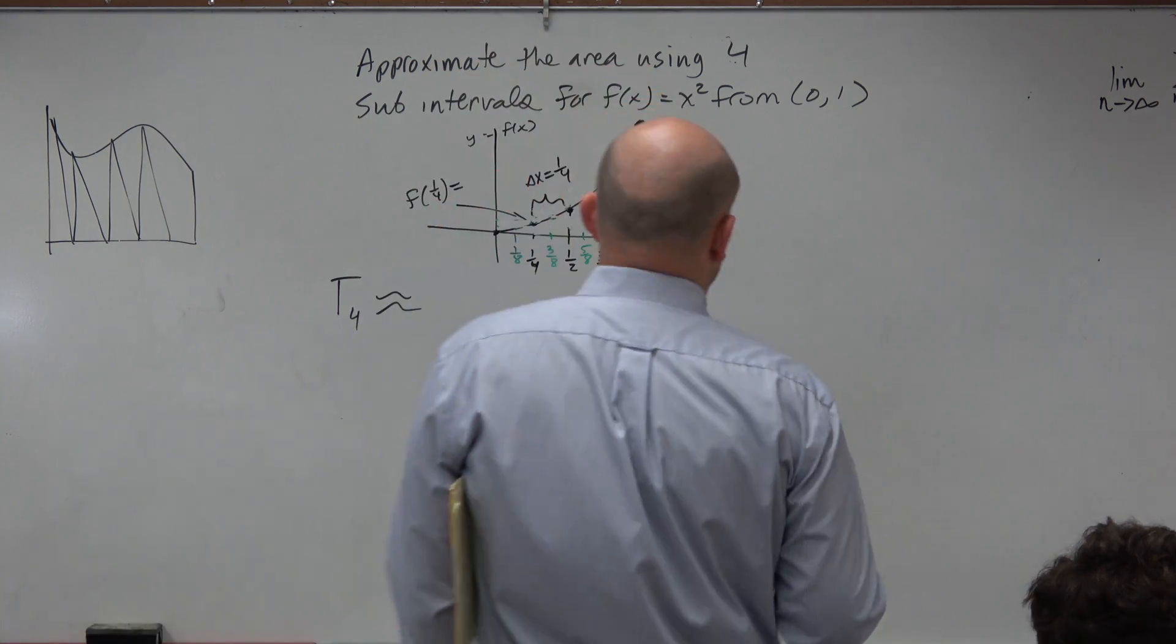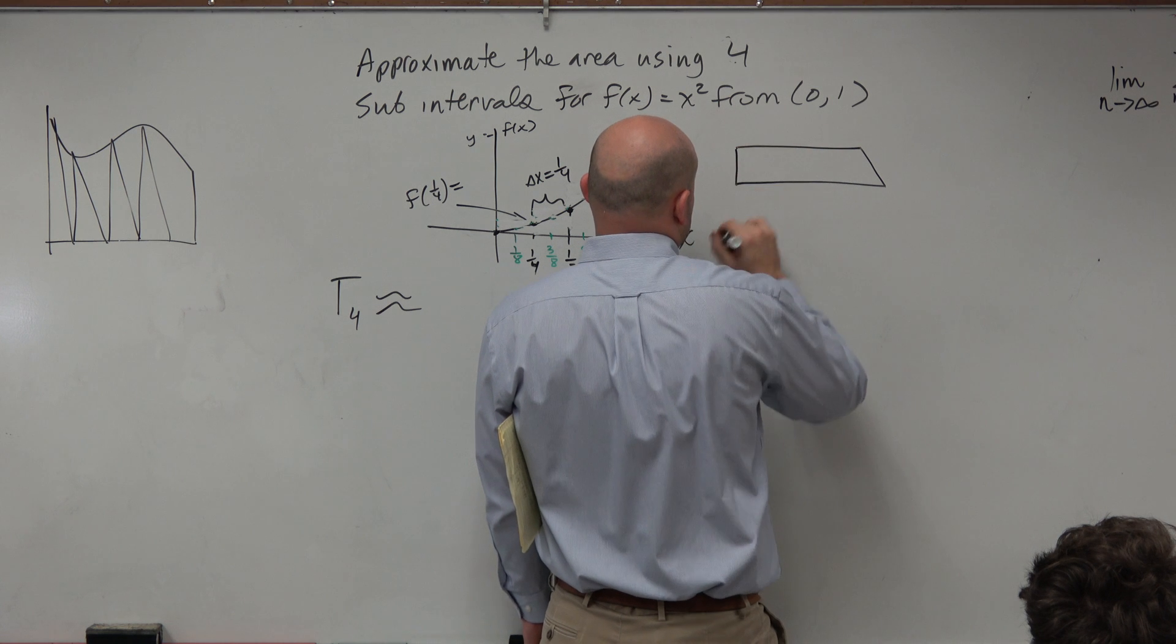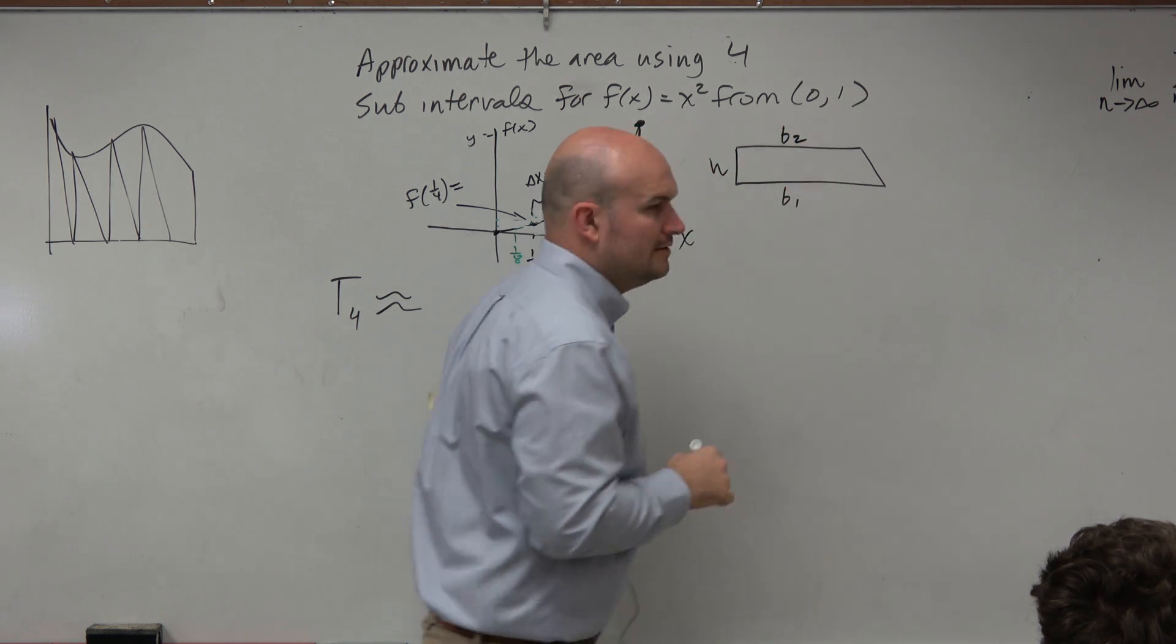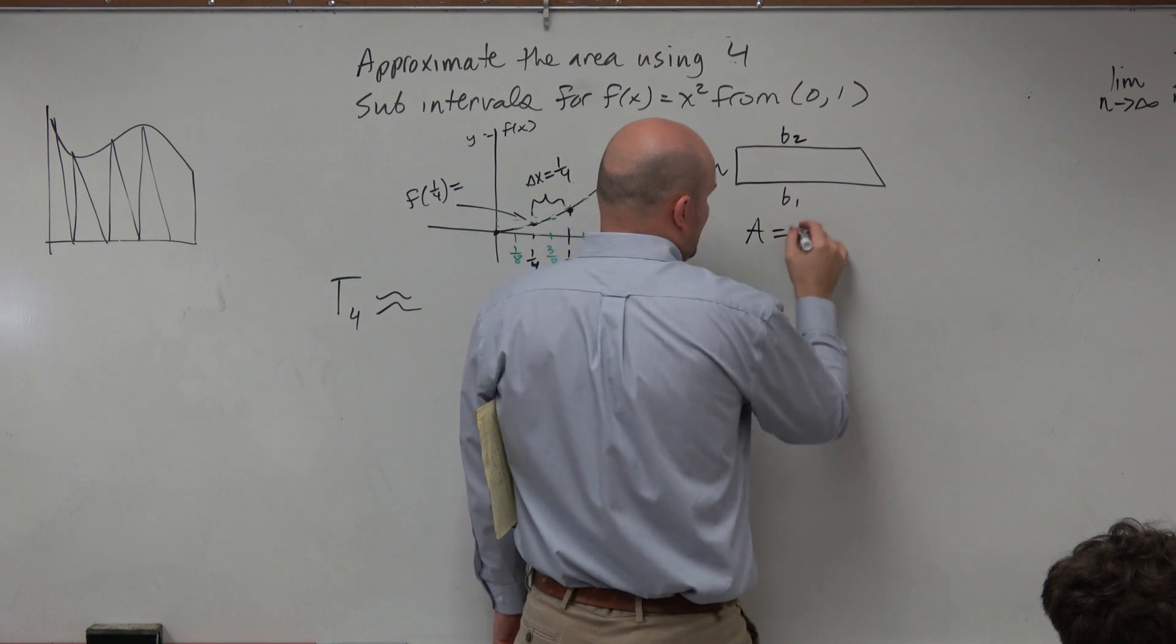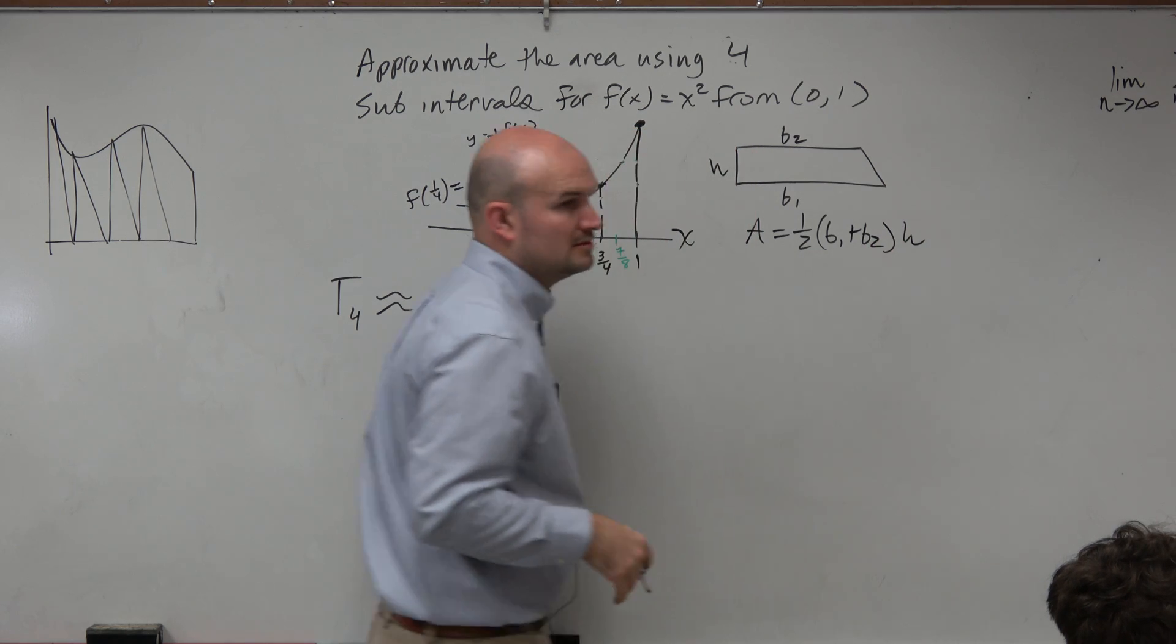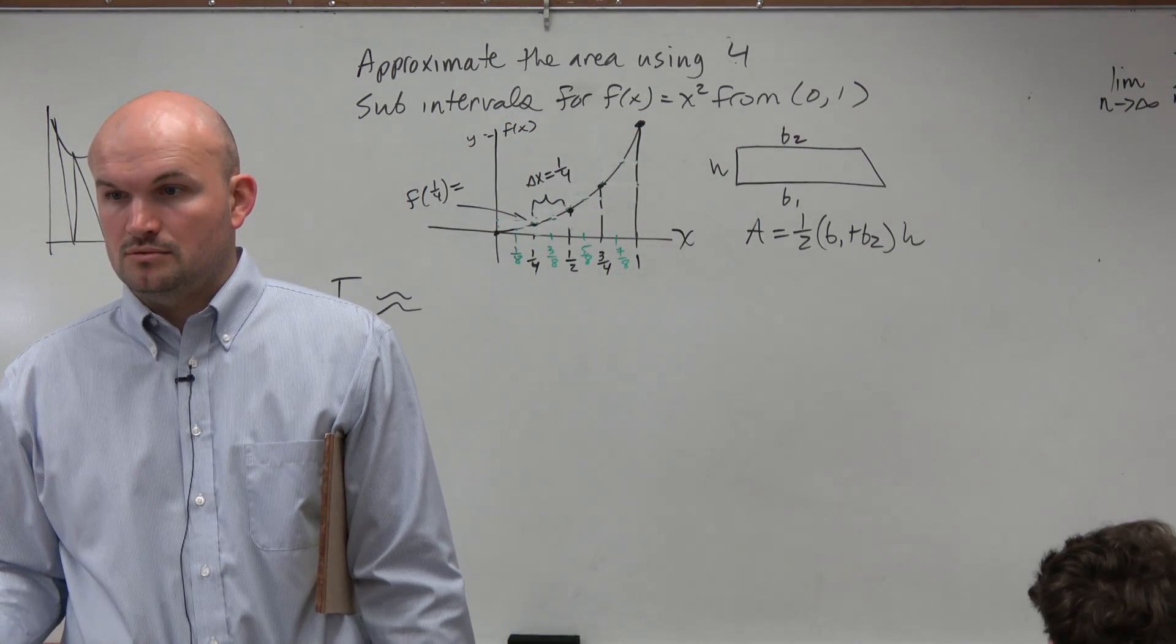Trapezoidal method. Now, this is important because when you guys learn about a trapezoid, and we've discussed this a little bit in class, the area of a trapezoid is area equals 1/2 base 1 plus base 2 times height.